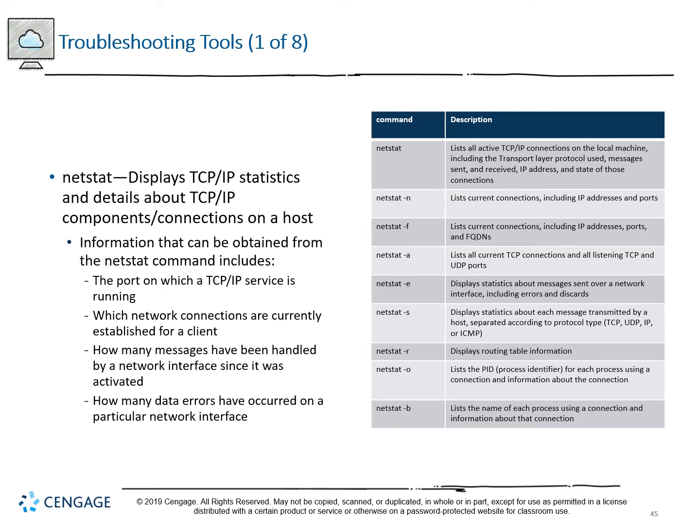NetStat — network statistics — displays TCP/IP statistics and details. You can find what port a service is running on, what connections are currently established, how many messages have been handled by an interface since it was activated, and how many errors have occurred. There are a number of different flags including -N, -F, -A, -E, -S, -R, -O, and -B. There is a MindTap assignment for practicing with these.